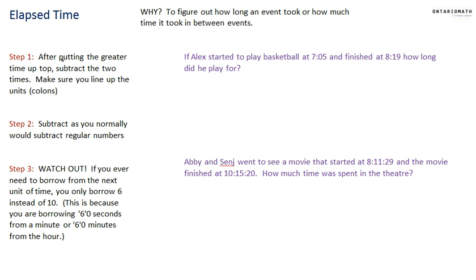Step one: After putting the greater time on top, subtract the two times. I need to find the greater time, which is the end time at 8:19. I'll write it neatly and subtract the start time, 7:05, putting that smaller time at the bottom. Make sure to line everything up based on the colon so these are right on top of each other.